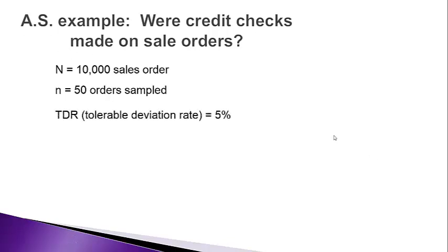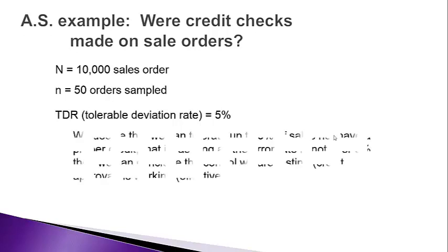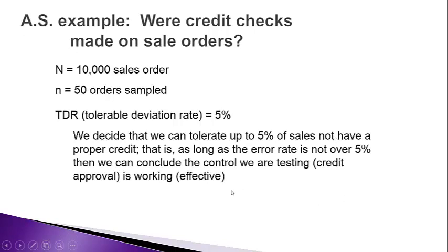Before we take the sample, we have to determine what is called the tolerable deviation rate, or TDR. The tolerable deviation rate is akin to materiality — we can tolerate deviations of up to 5% before we say the controls are not effective. So as long as the error rate is not over 5%, we can conclude the controls are working effectively.